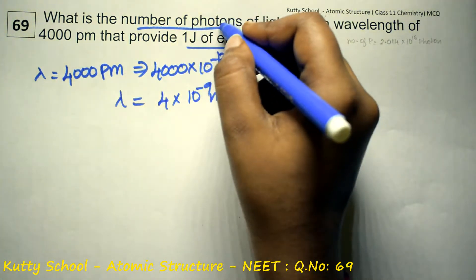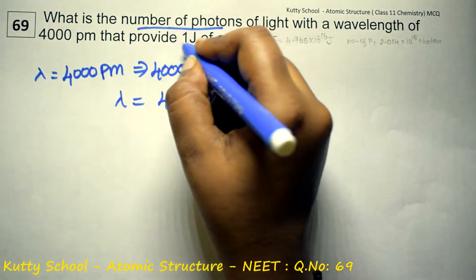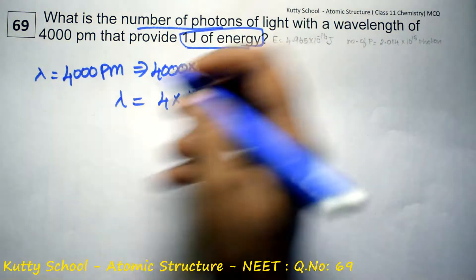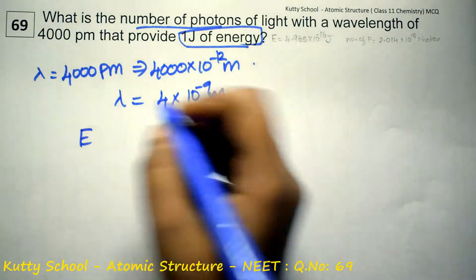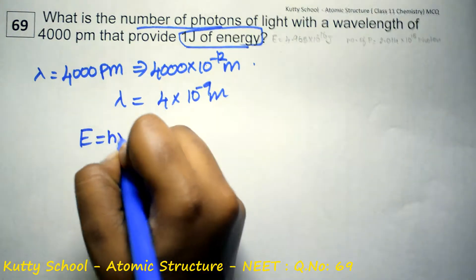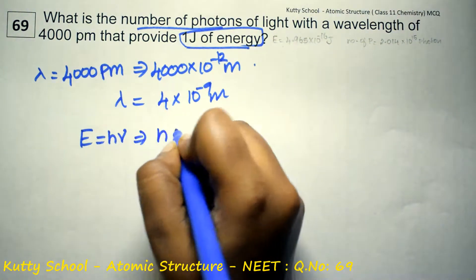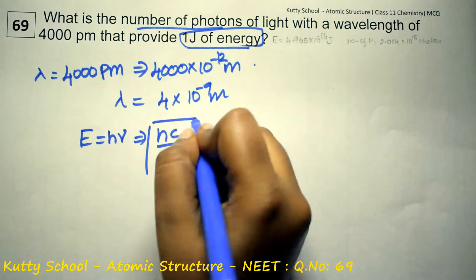Now, number of photons that provides 1 joule of energy. So first we calculate energy. E is equal to - we have lambda given, so E is equal to h nu, so that will be hc by lambda. So the formula.